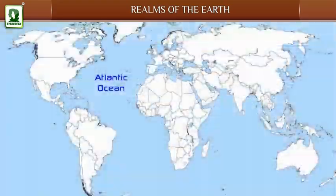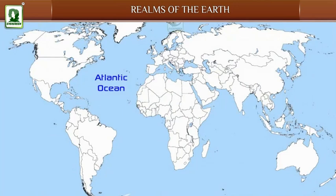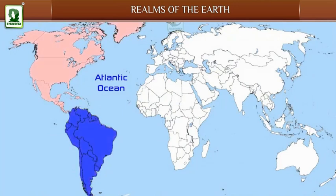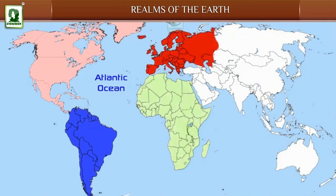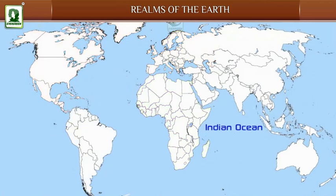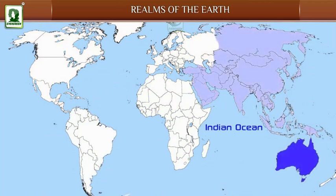The Atlantic Ocean is the second largest ocean, with the continents of North America and South America on its west and the continents of Europe and Africa on its east. The Indian Ocean is the third largest major ocean. It is the only ocean to be named after a country. It is bordered by Asia in the north, Australia in the east, and Africa in the west.